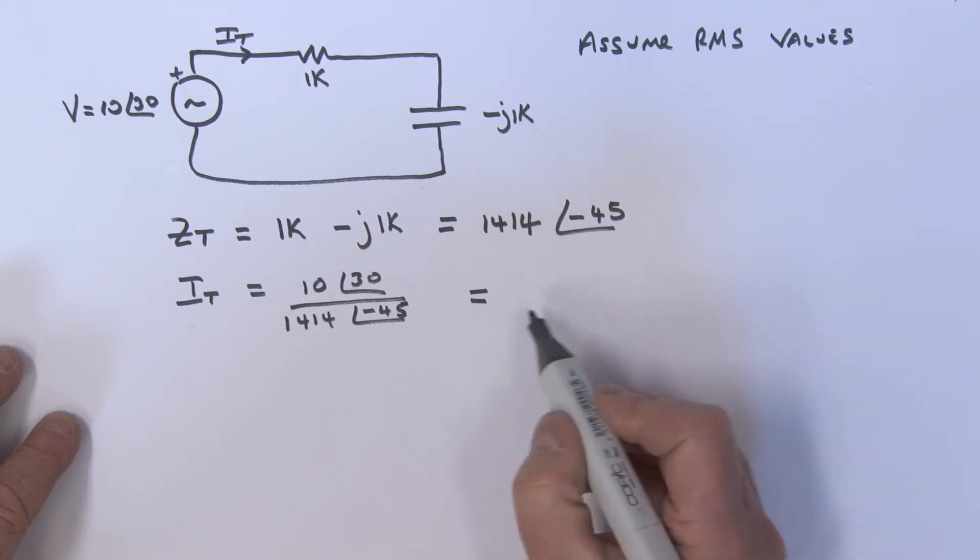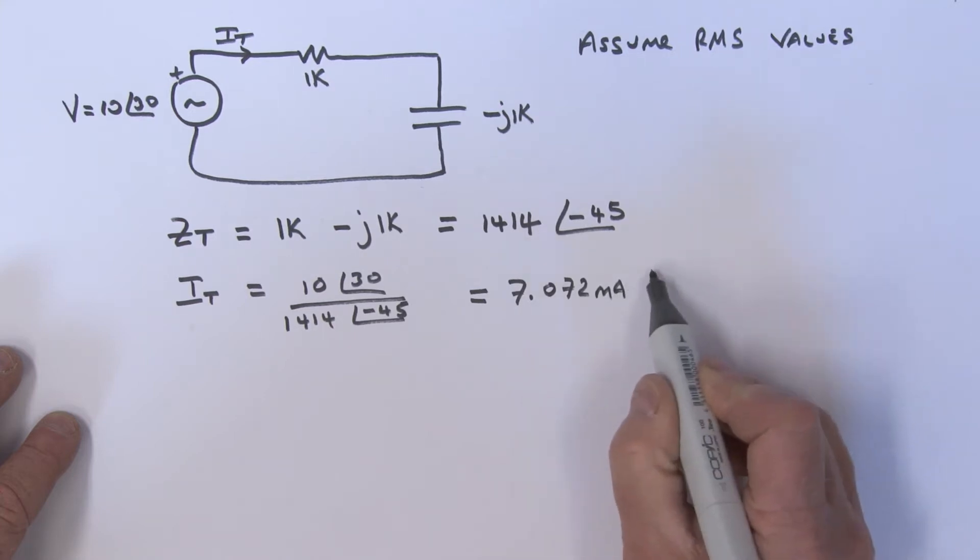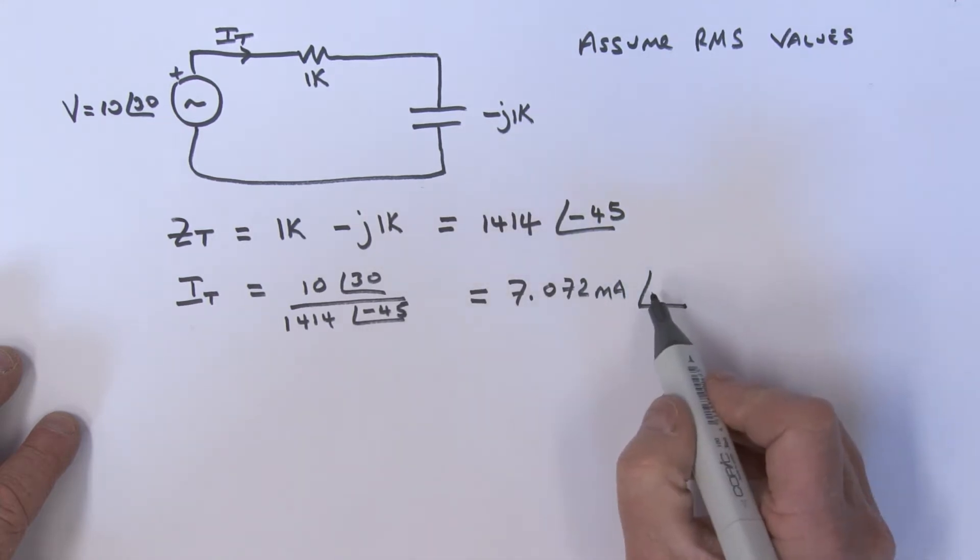If we actually do this, then we come up with a value of IT being 7.072 milliamps, and of course my angle here is going to be - well, this 45 is brought up to the numerator, changes its sign, and so this is going to be 75 degrees.